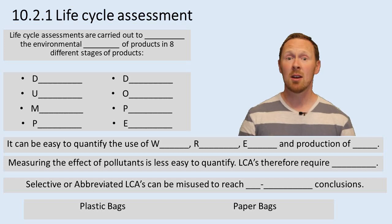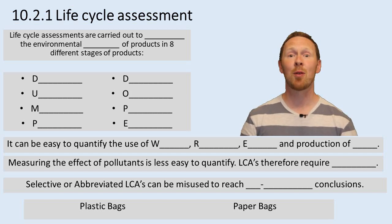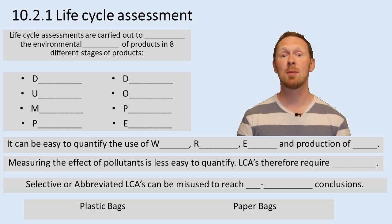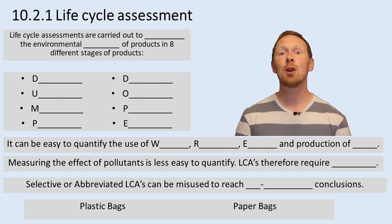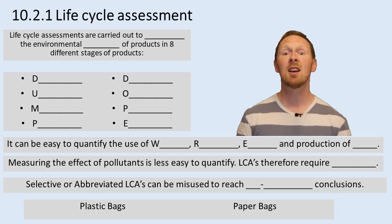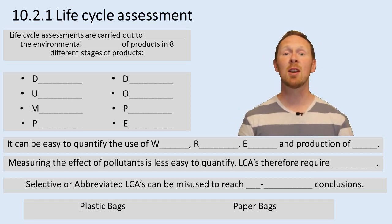Starting at the bottom: in terms of production and extraction, that has an impact on the environment and can be included in the Life Cycle Assessment — so the production of a material and the extraction of the raw material it's going to be used for. M and P is manufacturing and processing, so everything you use requires manufacturing, making, and processing. U and O is the use and operation — so the use of a product or the operation of a process has an impact on the environment. Finally, the distribution and disposal of a product can also be included.